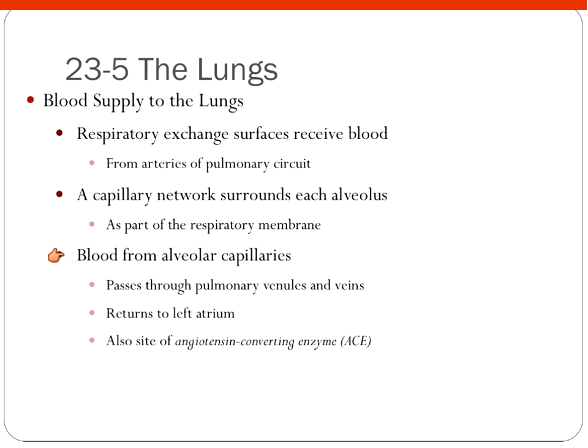Blood from the alveolar capillaries passes through the pulmonary venules and veins, then goes back into the left atrium of the heart freshly oxygenated, and then makes its way throughout the different parts of your body. Interestingly, at the pulmonary veins and venules, we also have the site of angiotensin-converting enzymes, which convert angiotensin-1 to angiotensin-2 — something we need for aldosterone to be produced. Aldosterone makes sure we retain sodium ions so we can also retain water, which increases blood volume and therefore increases blood pressure. This shows how the respiratory system is very intimately tied to the circulatory system.